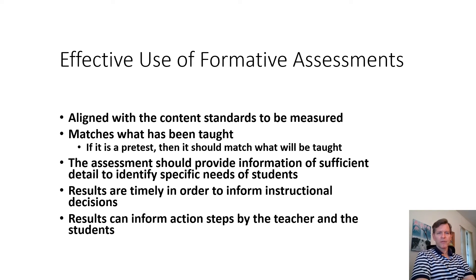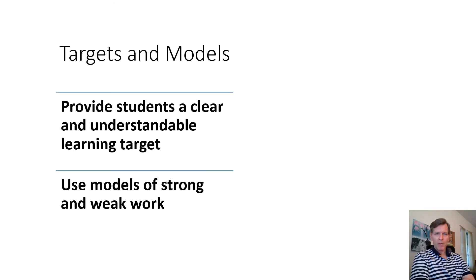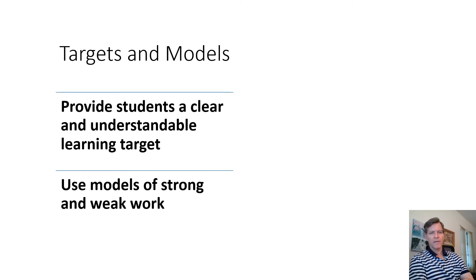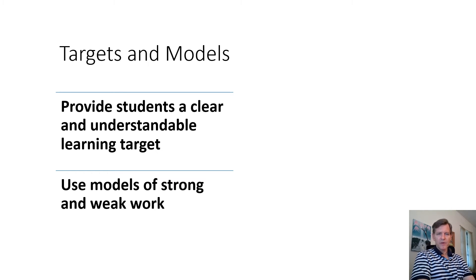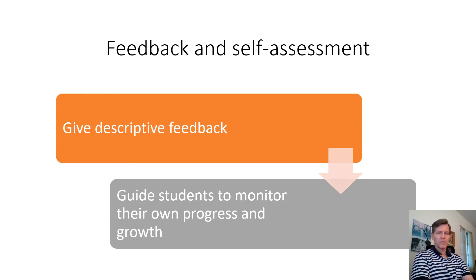Make sure your formative assessment is well aligned — match what's been taught. Carefully provide students with clear, understandable learning goals and targets. The student should understand: here's what I'm supposed to learn, here's why, here's how, and here are actions I can take in my writing, reading, or math to demonstrate whether I'm learning. Give students examples of good work and lower-quality work — for instance, high-quality writing — that the student can use as a model to monitor progress and have something to aim for. Provide strong feedback to guide the student in monitoring their own progress.